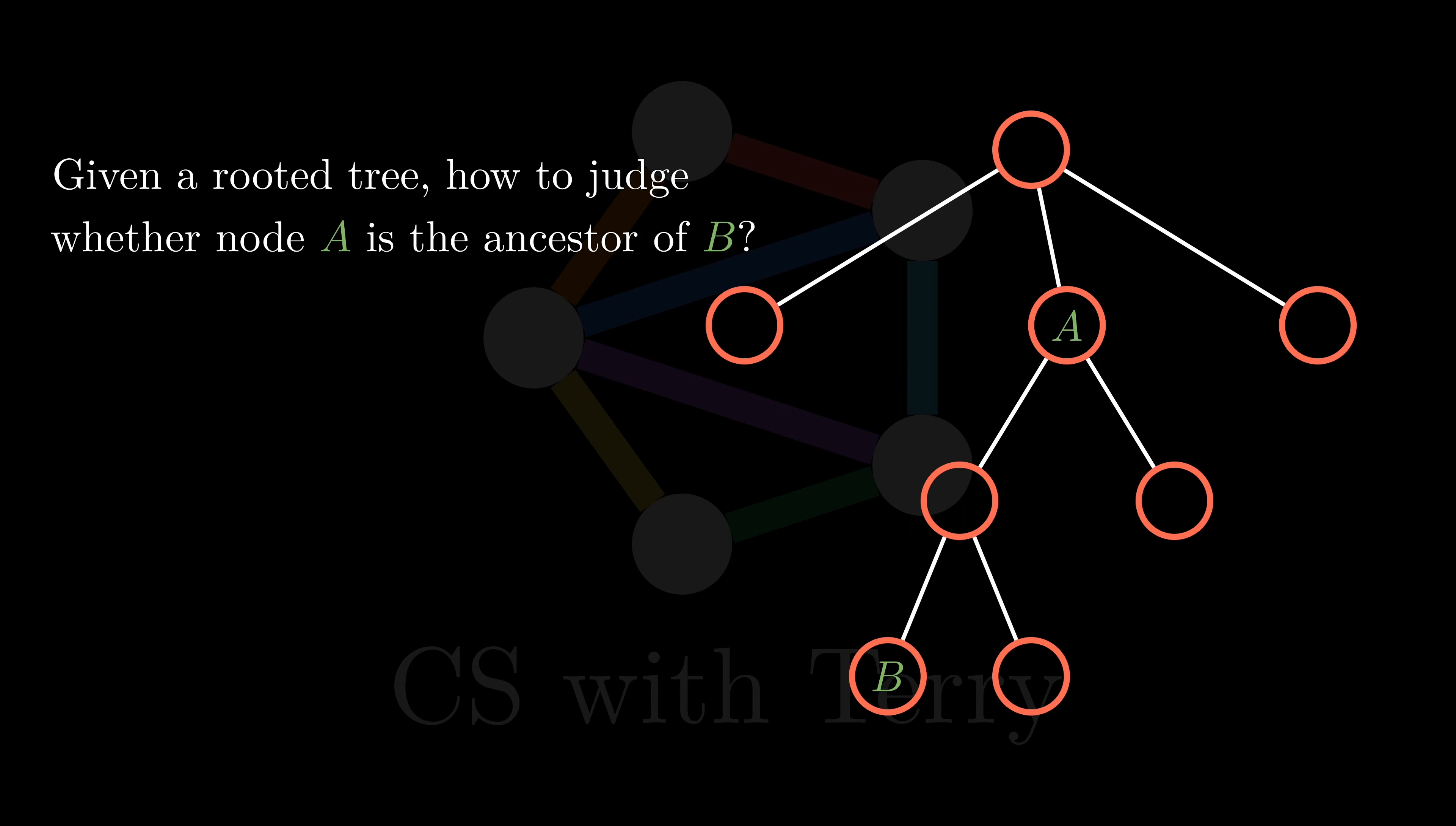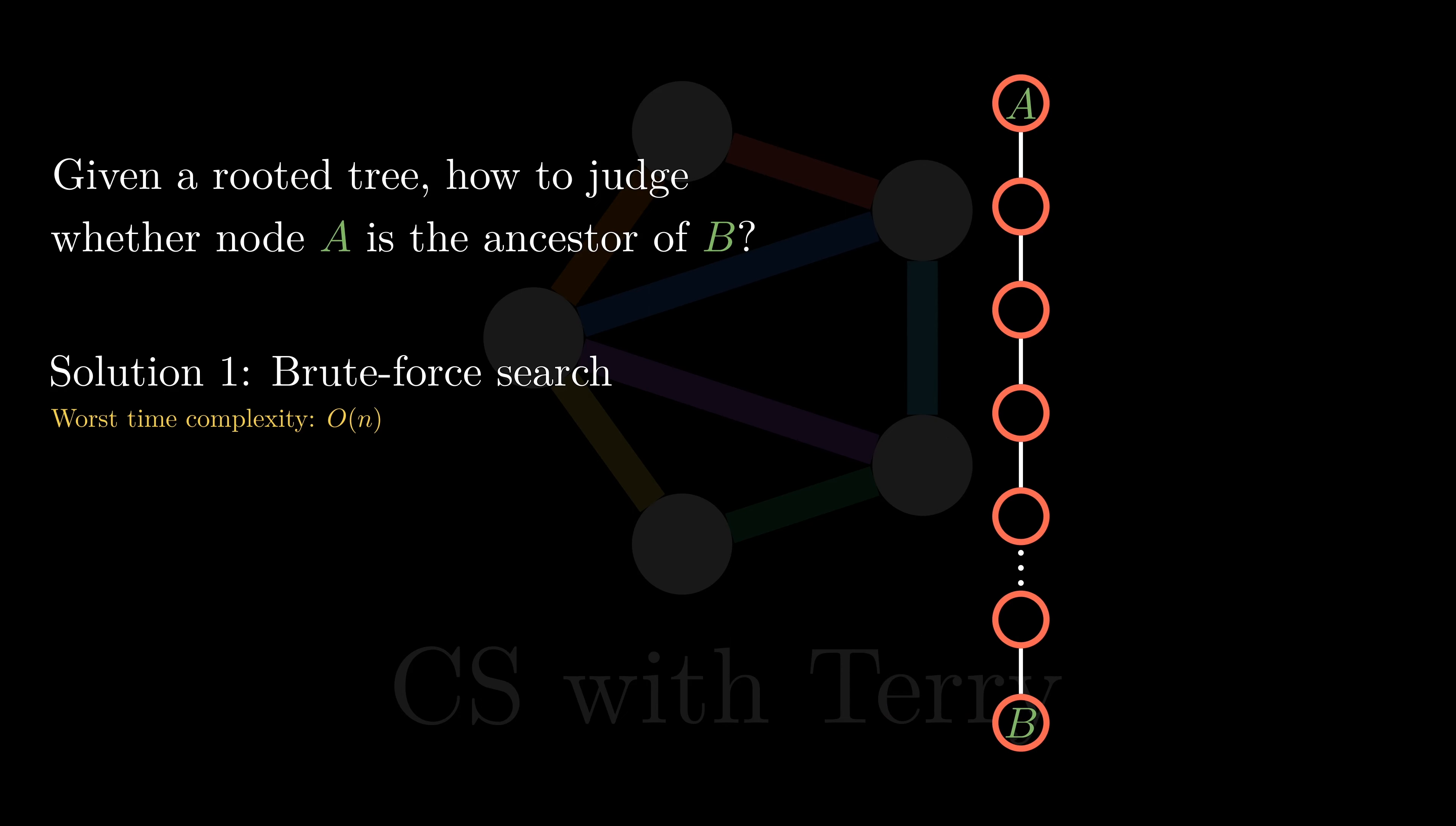At first glance, this question may seem too easy. We just need to try to search for node B by traversing down from node A, or try to search for node A by traversing up from node B. However, in the worst case, the time complexity of this naive algorithm is O(n). For example, when the tree is a linked list, and A and B happen to be the root and leaf nodes, we need to traverse the entire tree to determine whether A is an ancestor of B.